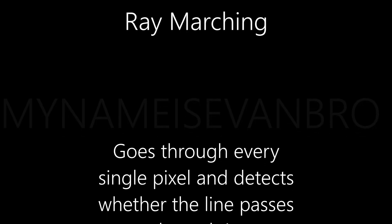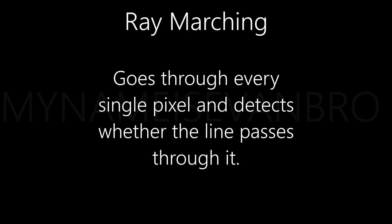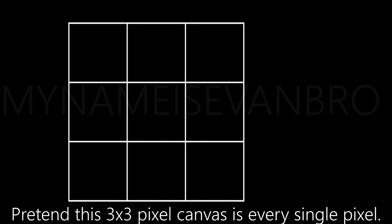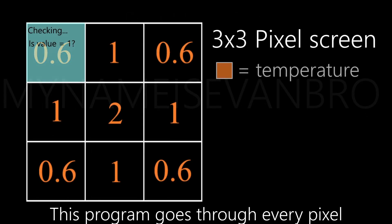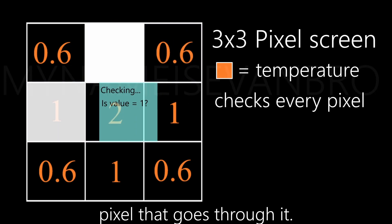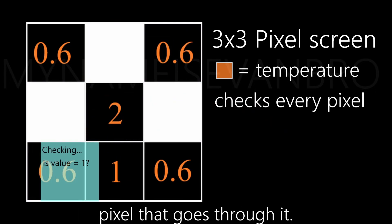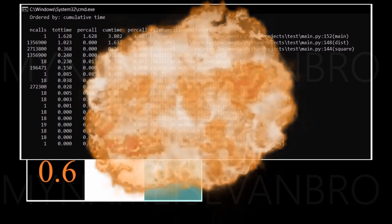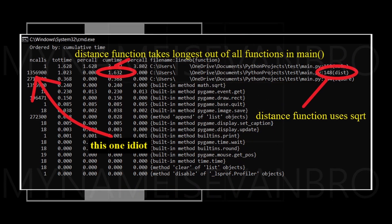Ray marching goes through every single pixel and detects whether the line passes through it. Pretend this 3x3 pixel canvas is every single pixel. This program goes through every pixel to see if the line passes through it and draws that pixel that goes through it. This is cool until your computer blows up because this would have to use heavy square rooting functions for my 500x500 pixel canvas.